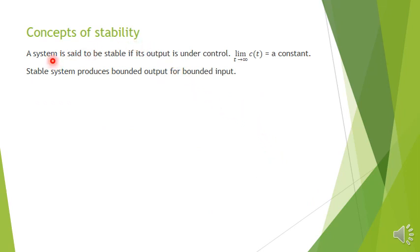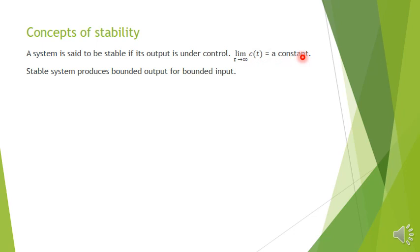A system is said to be stable if its output is under control. Output under control means the limit as t tends to infinity of c(t) is a constant. If it goes to infinity, the output is uncontrolled and the system is unstable. A stable system produces bounded output for bounded input — for a constant input, it produces a constant output.